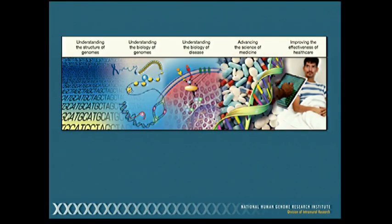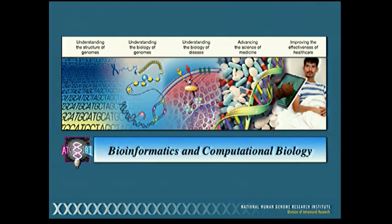Eric reinforced that sentiment when he showed you this figure from NHGRI's current vision document published in Nature last February, showing the spectrum of genomics-based research — from understanding human genomes, their structure and actual sequence, through the biology of what's encoded in those genomes, how that relates to our understanding of human disease, advancing into medical applications to finally improve the effectiveness of healthcare. Our ability to work across this entire spectrum rests in large part on our ability to use computational approaches to generate and analyze the kinds of data from whole genome sequencing studies, genome-wide association studies, clinical sequencing, pharmacogenomics, and the whole range of genomic science you'll hear about throughout this course.